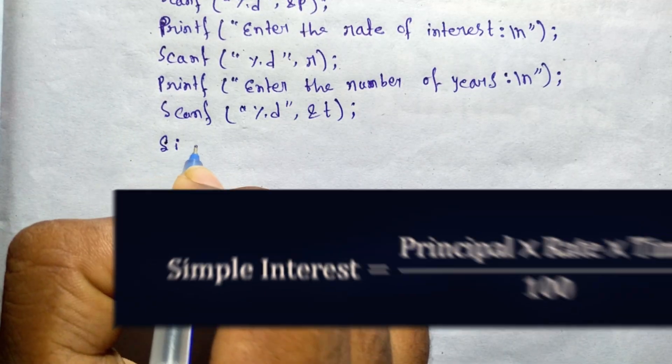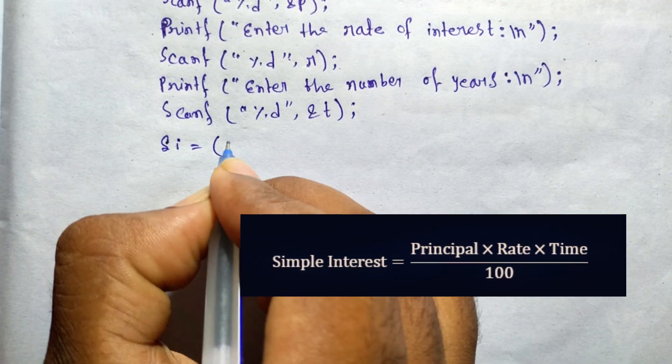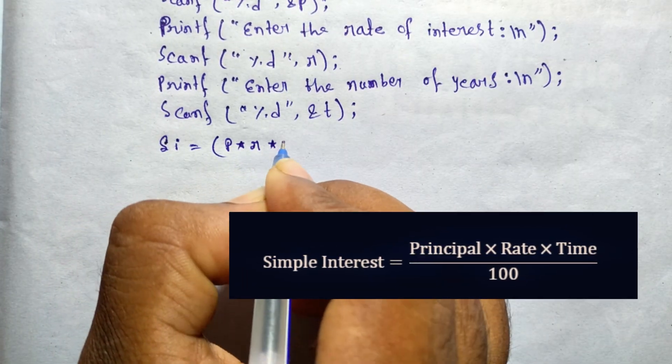Using the formula, simple interest equals P multiply R multiply T divided by 100.